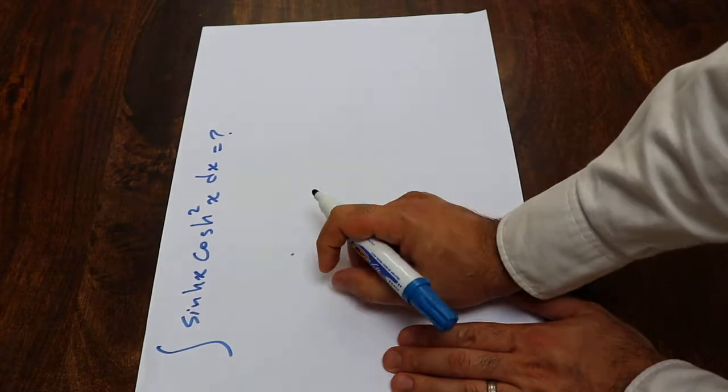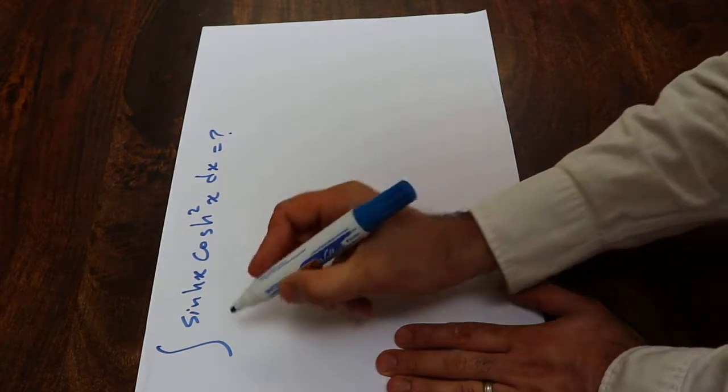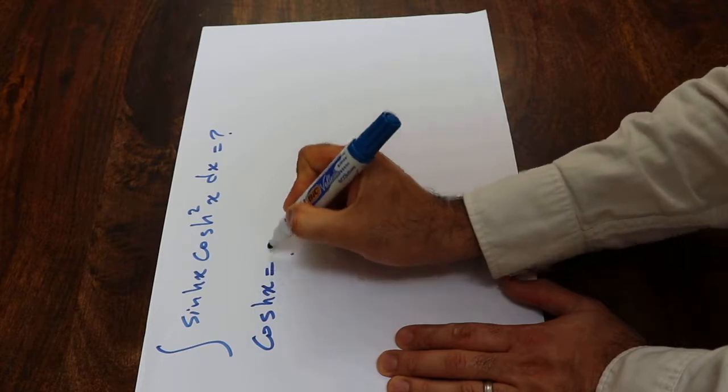You can solve this integral using the substitution rule. So if you define hyperbolic cosine x as u,